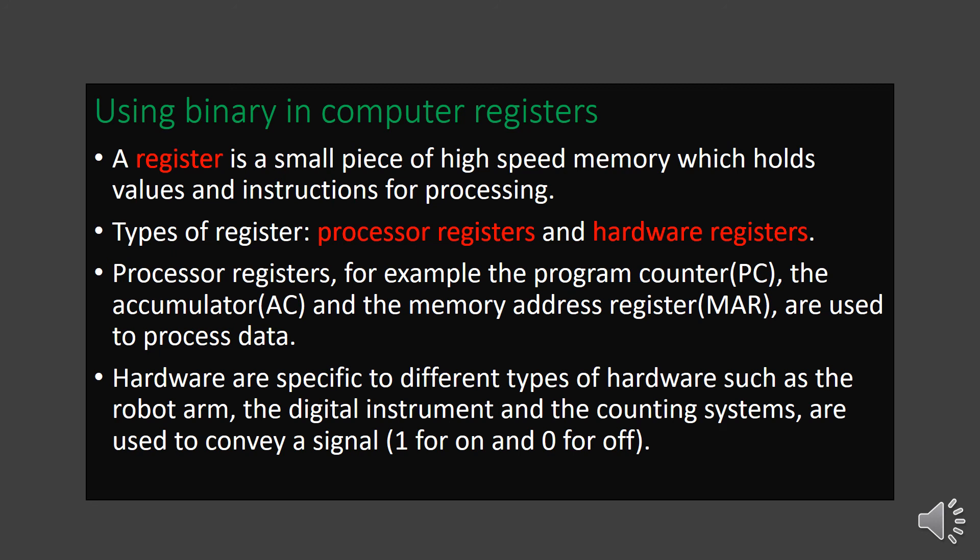There are two types of registers: processor registers and hardware registers. Processor registers include the program counter, the accumulator, and the memory address register. The program counter assigns a value to proceed with the next instruction. Hardware registers are specific to different types of hardware devices such as a robot arm, digital instruments, and counting systems. A robot arm's registers store instructions for controlling it — lifting up, bringing down, moving left or right, picking and placing objects.